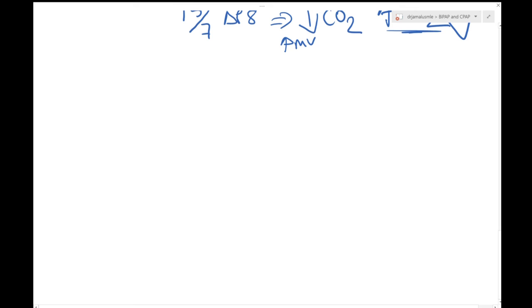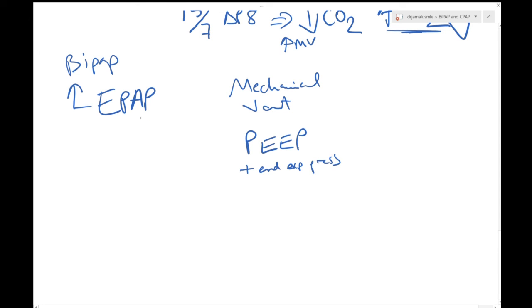In your exams, EPAP might not show up this way because this is the term we use whenever we're talking about BiPAP. But if they talk about mechanical ventilation, after you intubate a patient and you put him on the breathing machine, they would use PEEP instead. And PEEP basically means positive end expiratory pressure, and this correlates with the EPAP. It's just the same, but instead of saying EPAP they use PEEP. So whenever you see this word, you can remember it correlates with EPAP on a BiPAP.